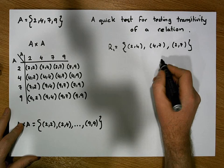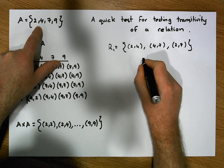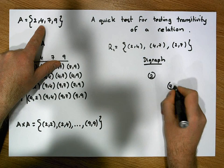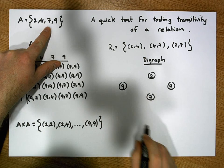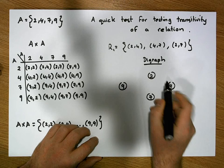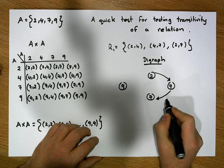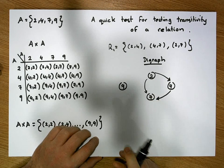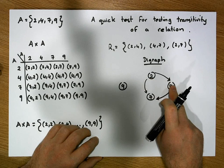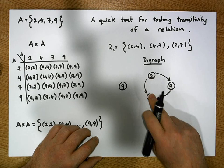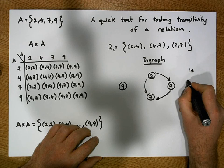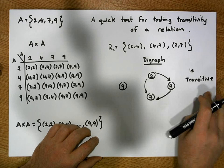Let's draw the digraph of this relation first. The relation is built on set A, so the digraph needs a node for each element in the set. Then for each ordered pair we place an edge on the digraph: 2 is taken to 4, 4 is taken to 7, and 2 is taken to 7. This digraph is transitive because anytime I can make a double hop — going from 2 to 4 and 4 to 7 — I can always make a direct hop from the source to the final destination by skipping the intermediate step.